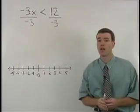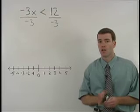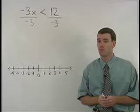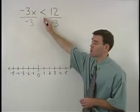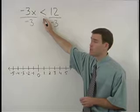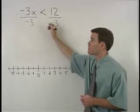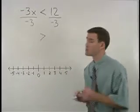But here's the rule you have to watch out for when solving inequalities: when you divide both sides of an inequality by a negative number, you must switch the direction of the inequality sign. So this less than in our original problem becomes greater than in our second step.